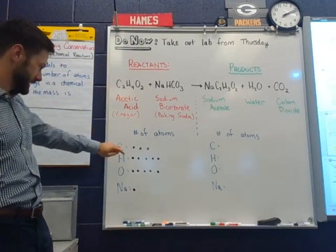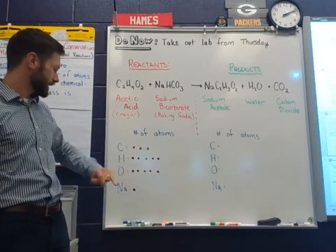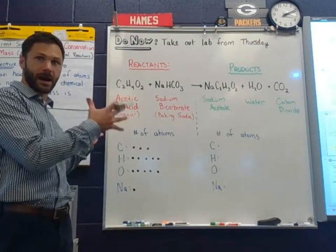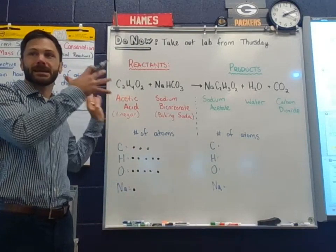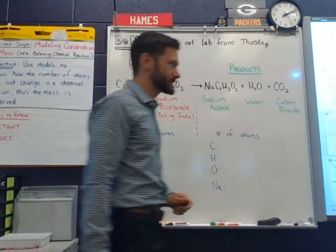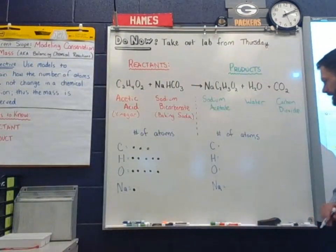Okay. So I don't think we missed anything. We got three carbon, five hydrogen, five oxygen, and one sodium in our reactants, present in the molecules that we're combining. So we can see those numbers. Now let's see if they check out on the other side of the equation.